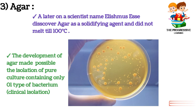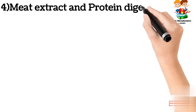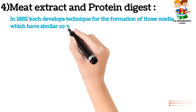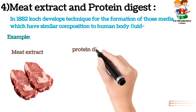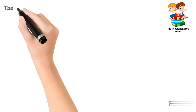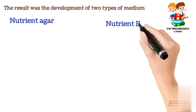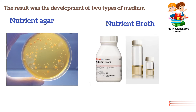Nowadays, agar is still used as a solidifying agent but with little modification. The next topic is meat extract and protein digest. In 1882, Koch developed a technique for the formation of media which have similar composition to human body fluids — that is meat extract and protein digest. This resulted in the development of two types of medium: nutrient agar and nutrient broth, both of which are still used in culturing. Nutrient agar is a solidifying agent used for surface culturing, while nutrient broth is a liquid medium used for bottom culturing.